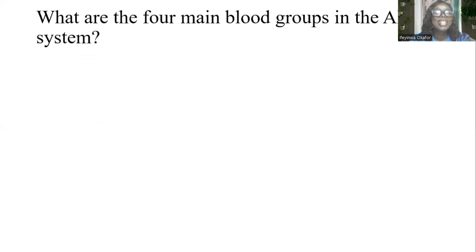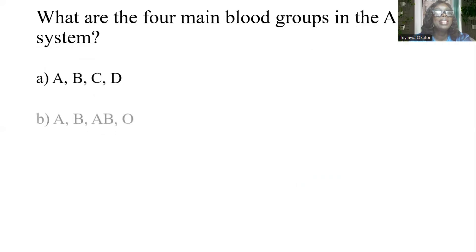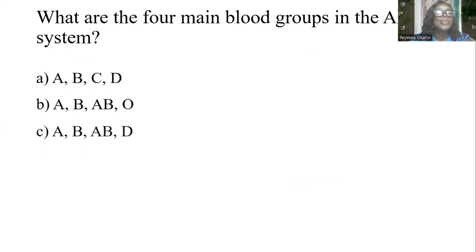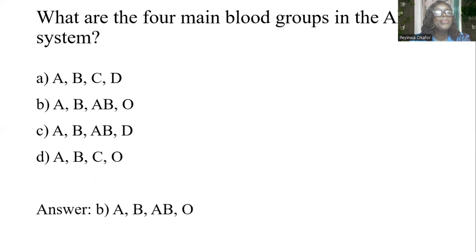Our first question: What are the four main blood groups in the ABO blood group system? Options: A) ABCD, B) A, B, AB, O, C) A, B, AB, D, D) A, B, C, O. The answer is B: A, B, AB, and O.